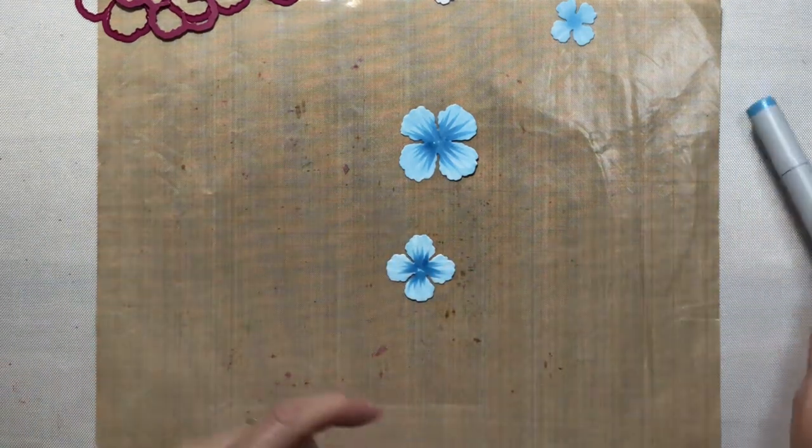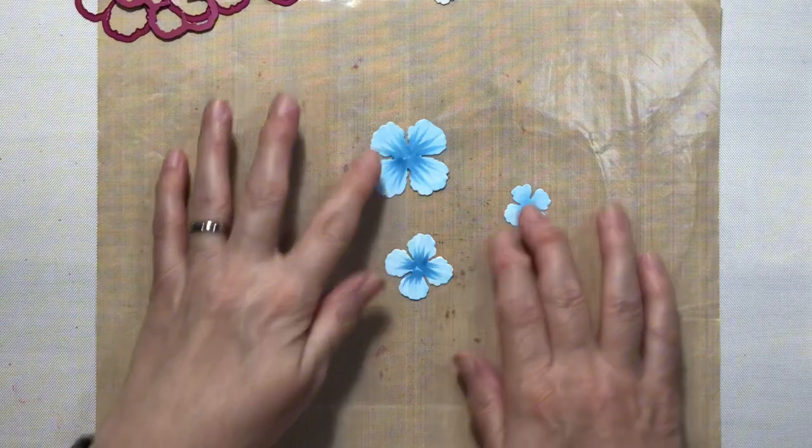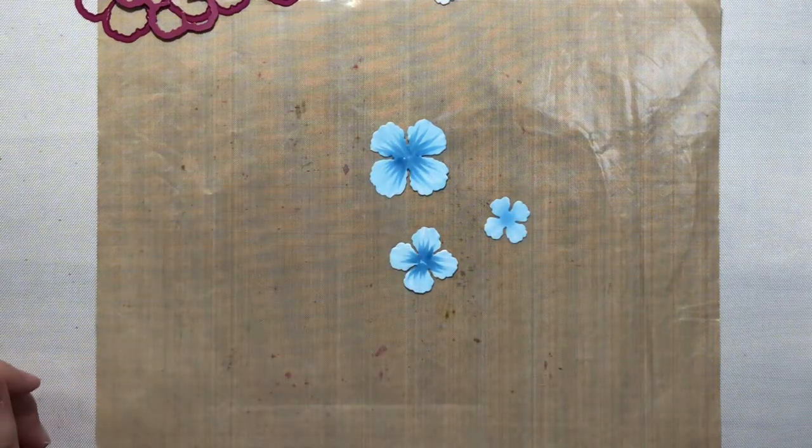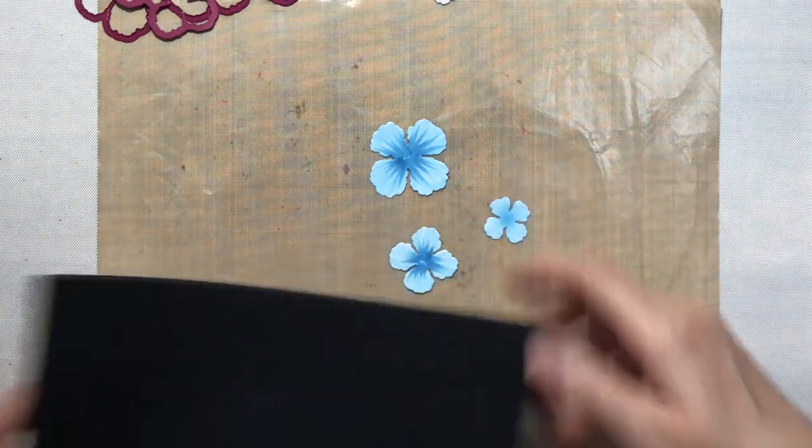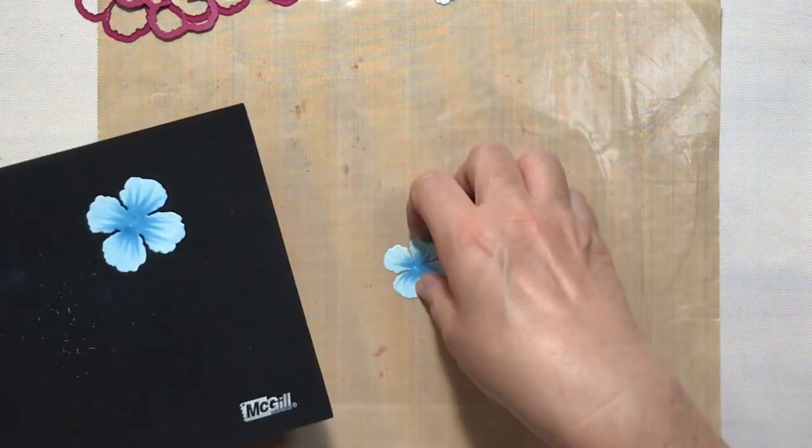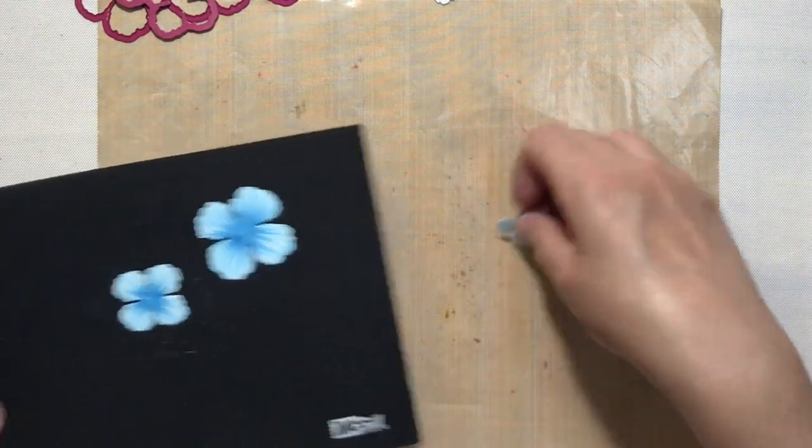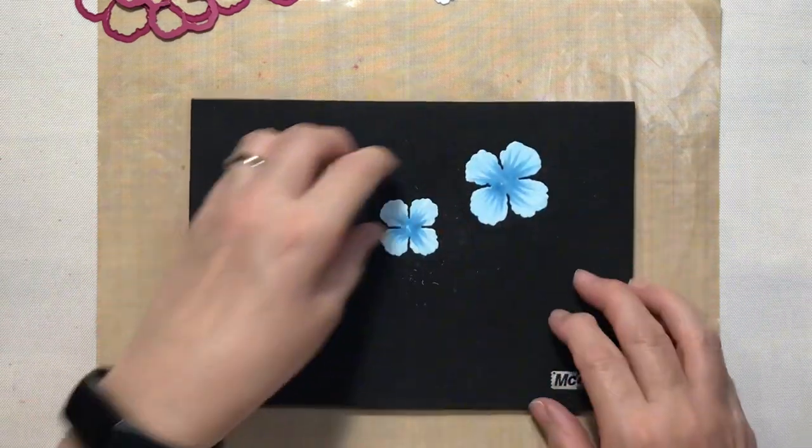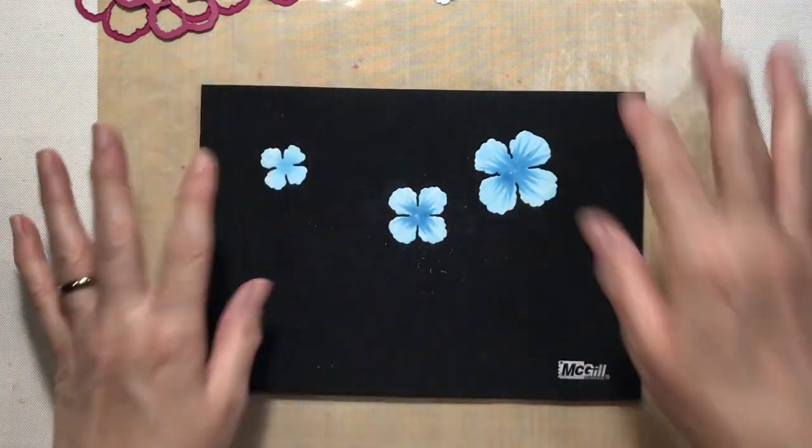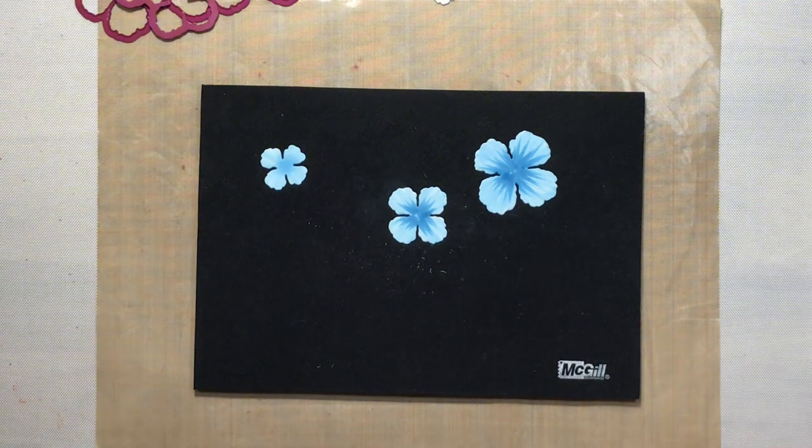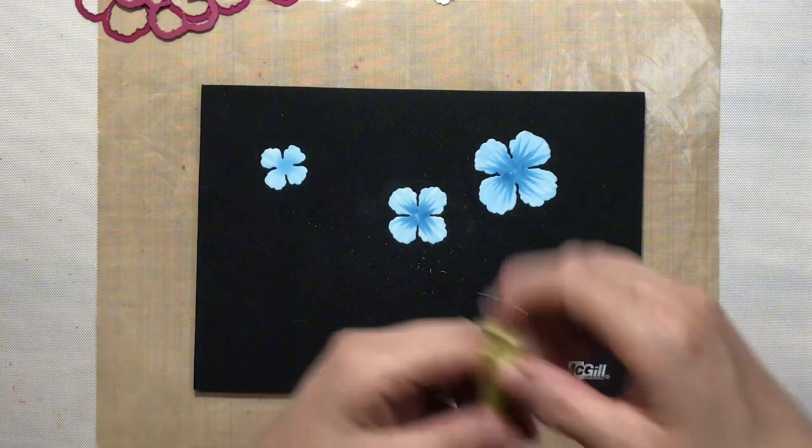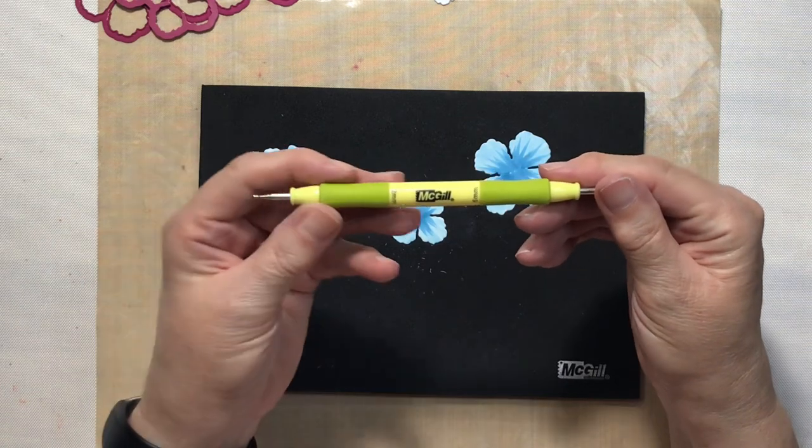Okay, and there is our coloring. So I'm going to go ahead and also show you real quick how I shape these different petals, and then I will go off screen and finish coloring all of them and shaping the rest of them. So I'm going to be using my McGill flower shaping kit.